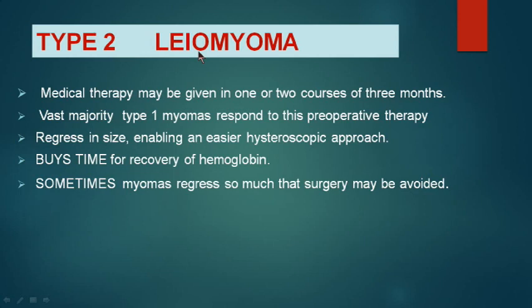For type 2 myoma — still projecting intracavitarily but with more than 50% within the myometrium — give medical therapy for 2 courses of 3 months. The vast majority of these type 2 myomas would respond to this preoperative therapy and regress in size so that you can do a good hysteroscopic myomectomy. It also gives time to recover the patient's hemoglobin, and sometimes the myomas regress so much that no surgery is required.